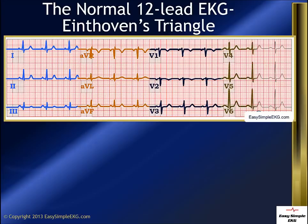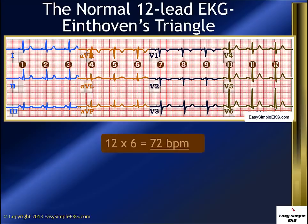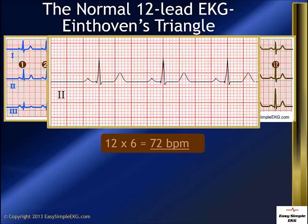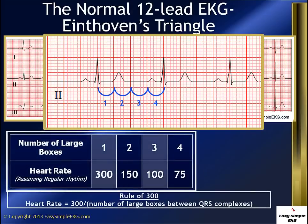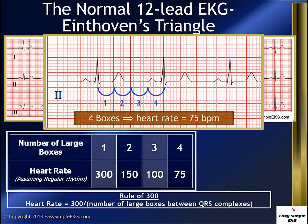You can calculate the heart rate by counting the number of QRS complexes and multiplying times 6. An easier way, but one that takes a little memorization, is to find a QRS complex that lands on one of the lines of a large box, then count how many large boxes are between that first QRS and the next one. Using the table, you can make a good guess what the heart rate is. Of course, you can always just look at the digital display of your heart rate monitor.